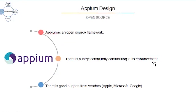Appium is an open source framework, and there is a large community contributing to its enhancements. If you face any issues, you can easily get answers from the community. There is also good support from vendors — Apple, Microsoft, and Google. As Google launches a new operating system, they make sure their automation tool works perfectly with it, unlike in Selenium where you have to keep libraries updated with Firefox versions and driver versions.